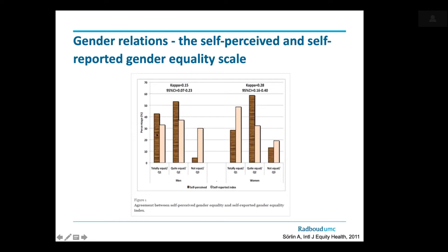When investigating gender relations, the key message is to always ask for subjective perception and try to measure it in some objective way. For example, when people are asked about equality in distribution of household tasks, most people say their relationship is quite equal, but when you actually ask how many hours each person devotes to childcare, chores, and organizing the household, you usually find quite striking differences. If you want to investigate gender relations, consider employing both a subjective and a more objective measure, because there's a lot of social desirability bias involved in these instruments.